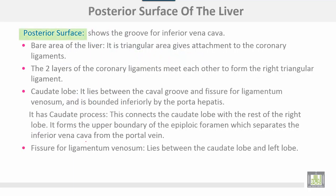The posterior surface of the liver shows the groove for the inferior vena cava. The bare area of the liver is a triangular area that gives attachment to the coronary ligaments. The two layers of the coronary ligaments meet each other to form the right triangular ligament. The caudate lobe lies between the cava groove and the fissure for ligamentum venosum.